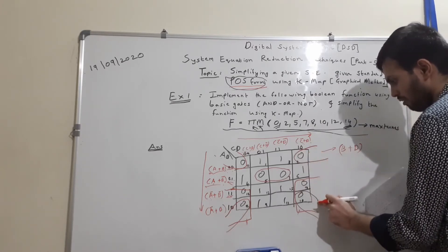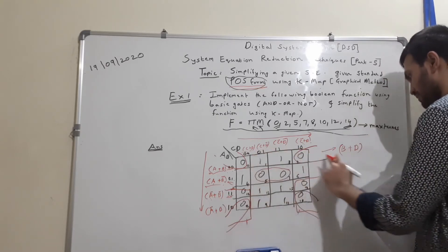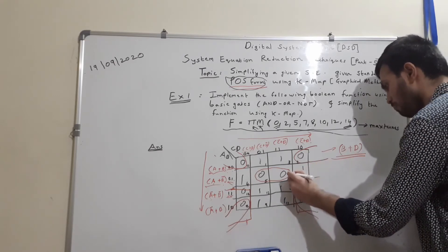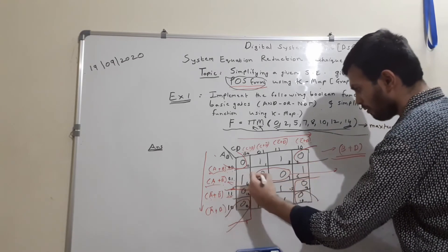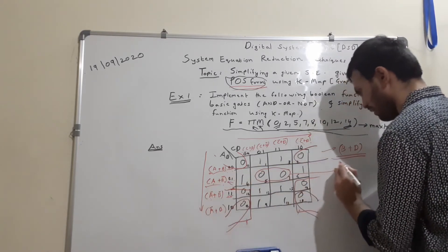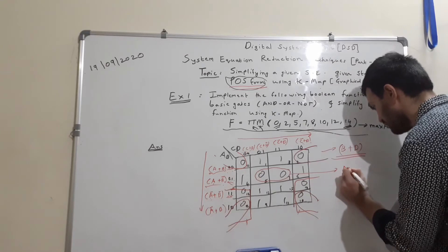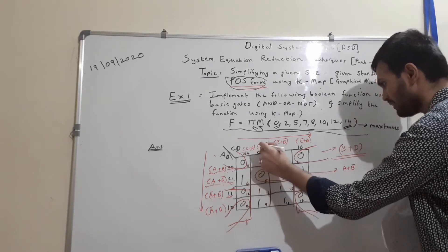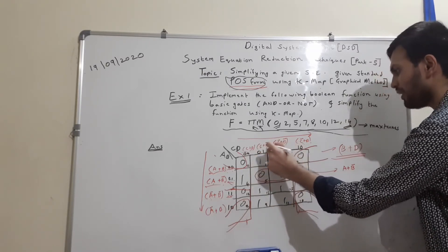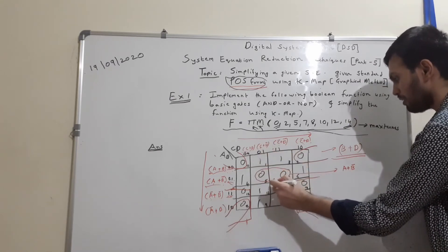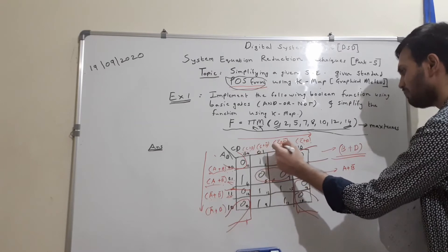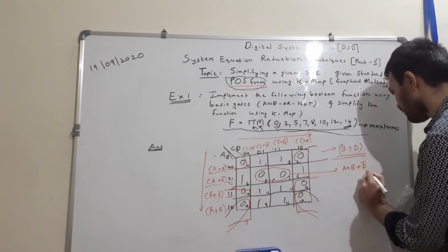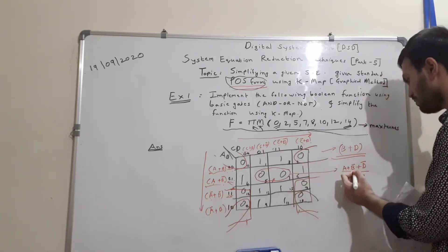Moving on to the pair of max terms 5 and 7: the row corresponds to A+B̄, which remains as is. For the columns, C+D̄ and C̄+D̄ are present — C changes to C̄, so C is eliminated, but D̄ is constant. So this pair gives the term A+B̄+D̄.